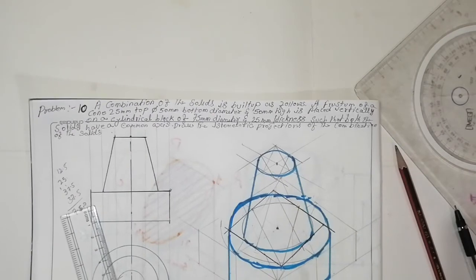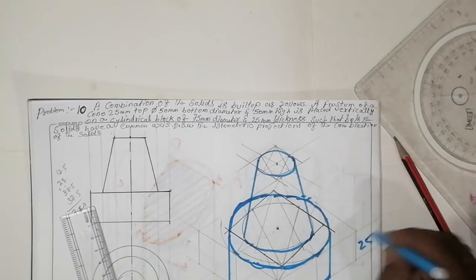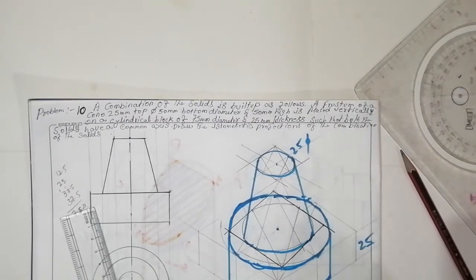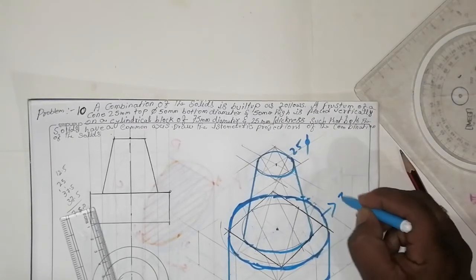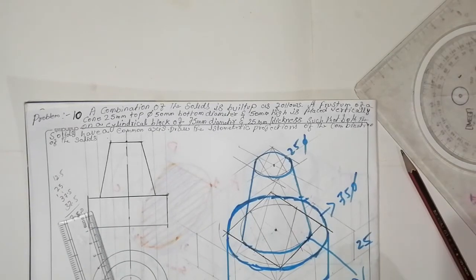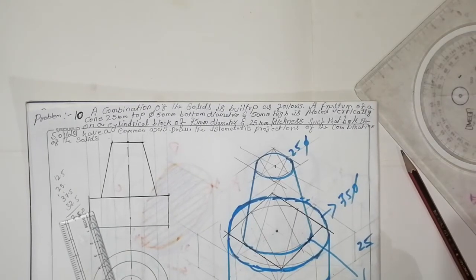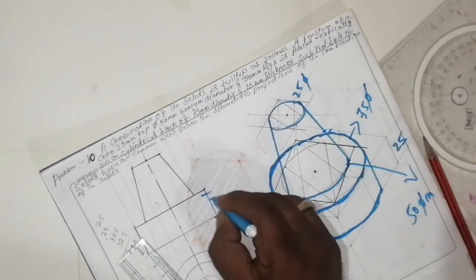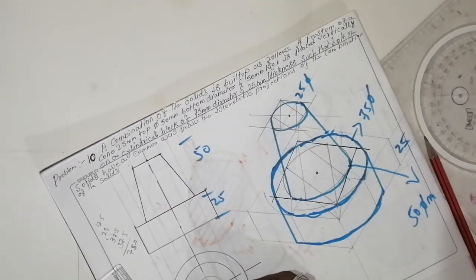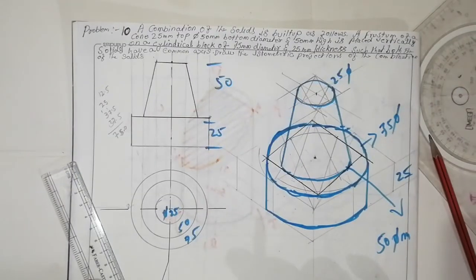This is a frustum: 25mm top diameter, 50mm bottom diameter, and 75mm base diameter. This will be 25mm thickness. This will be 25mm diameter and this will be 50mm diameter. Here also, the thickness is 25mm and the height is 50mm. Here also the diameters will be 25, 50, and 75.